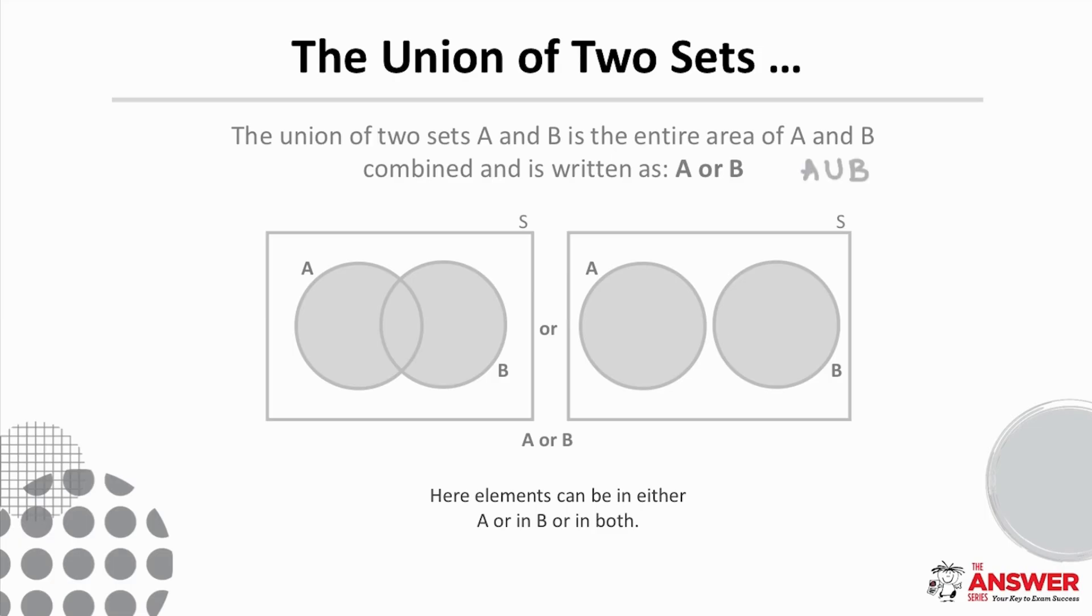Elements in A or B can exist in A or in B or in both and this is true for both overlapping and disjointed events.